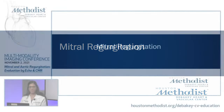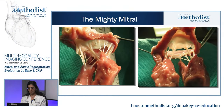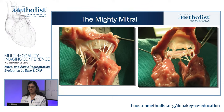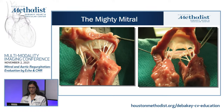Starting with mitral regurgitation — the mitral valve is a very complex structure that relies on the interaction between different components which include the papillary muscles, the cords, the anterior and posterior leaflet, and the mitral valve annulus, in addition to the LA and the LV. Any dysfunction in any of these components can lead to significant dysfunction and mitral regurgitation.